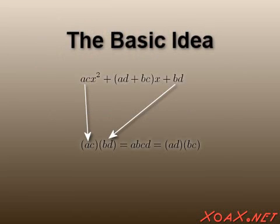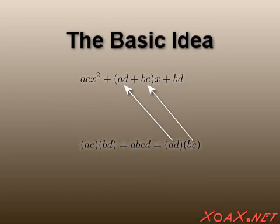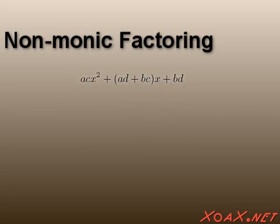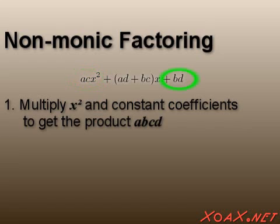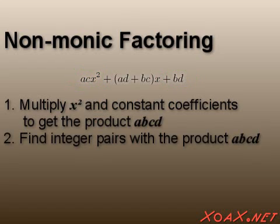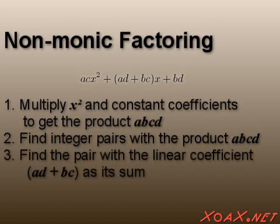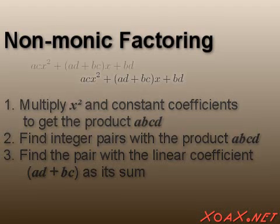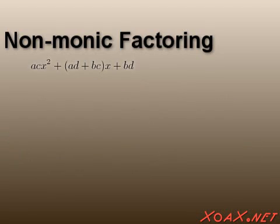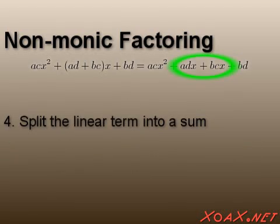Multiplying the x squared and constant coefficients, we get the product abcd, and the x coefficient is the sum of two factors of this product. So to factor the polynomial, we multiply the x squared and constant coefficients. Then we find the integer pairs that multiply to this value, and check whether the sum of any of these pairs is equal to the x coefficient. Once we find our sumands, ad and bc, we split the linear term into two pieces.